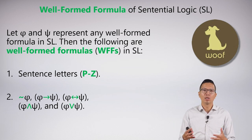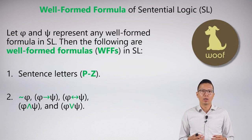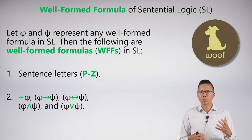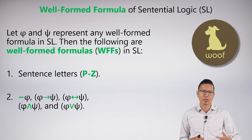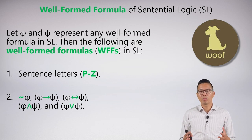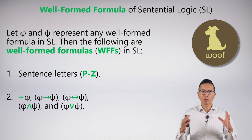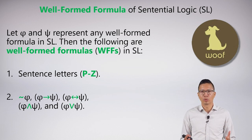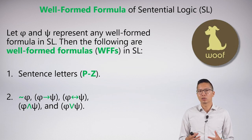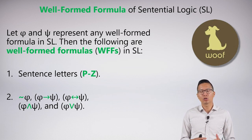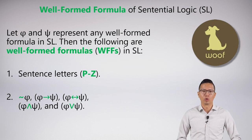Our binary connectives combine two things, and our unary connective — which is the negation — just modifies a single thing. This is how we build up more complicated formulas and make them well-formed. We relax the understanding of well-formed to include informal notation, because the definition of a well-formed formula is strictly speaking in official notation, but we're not too worried about that.